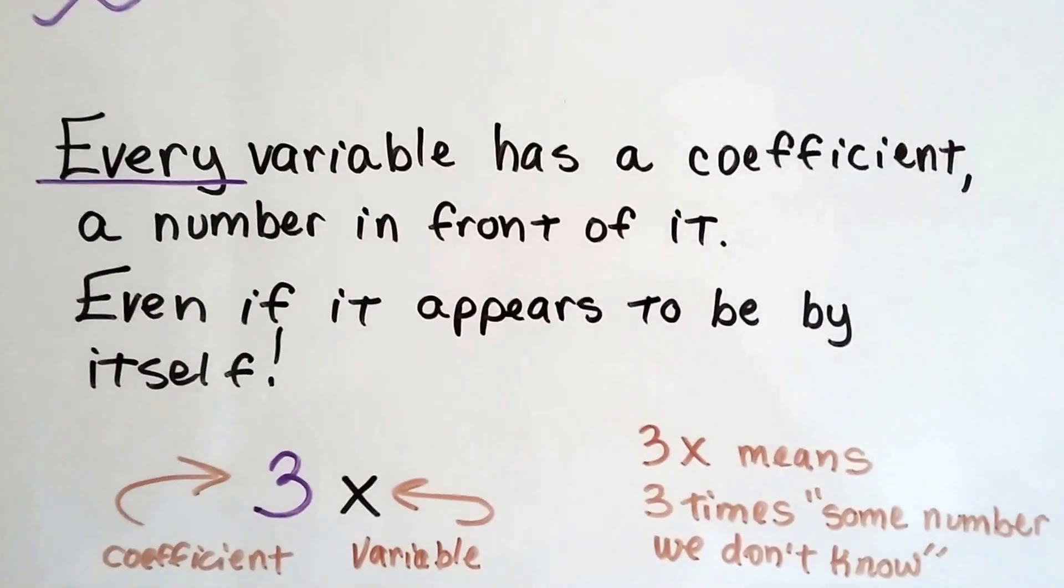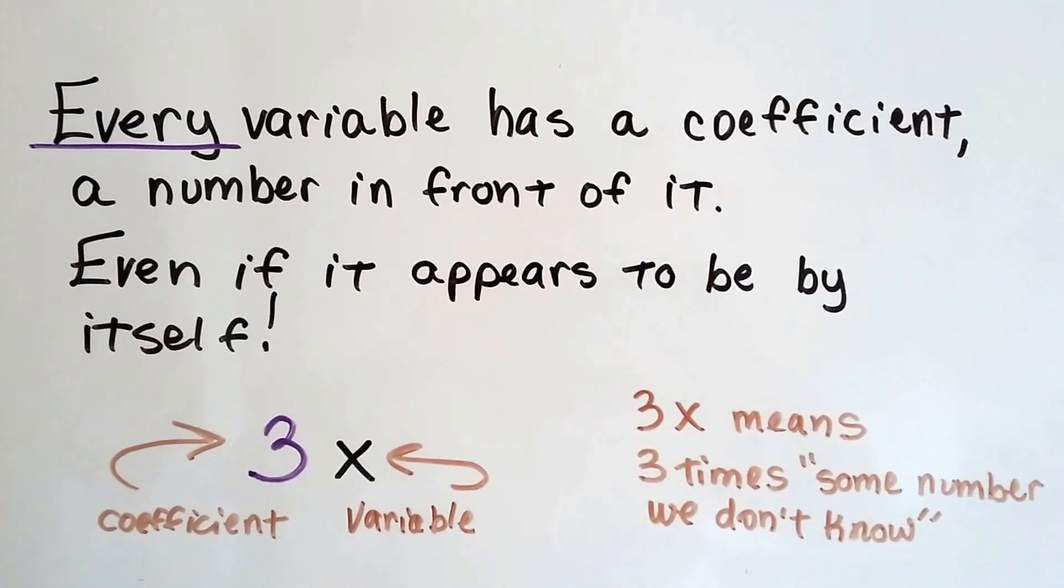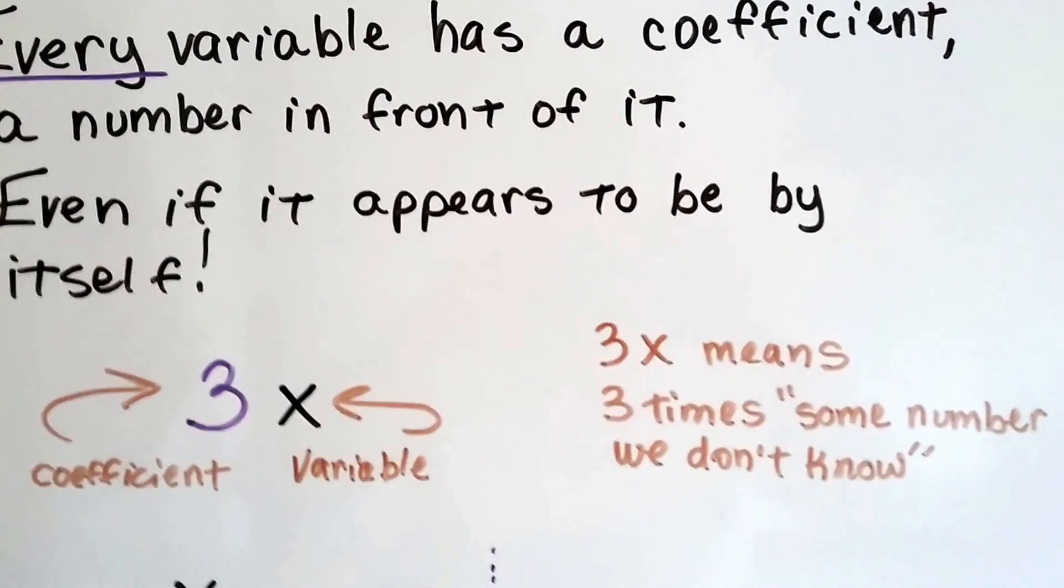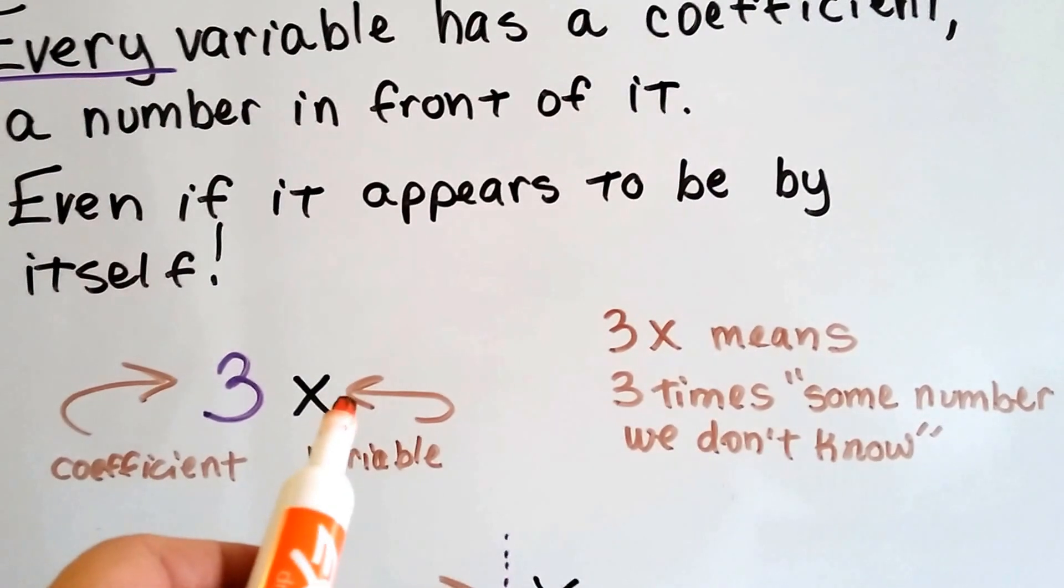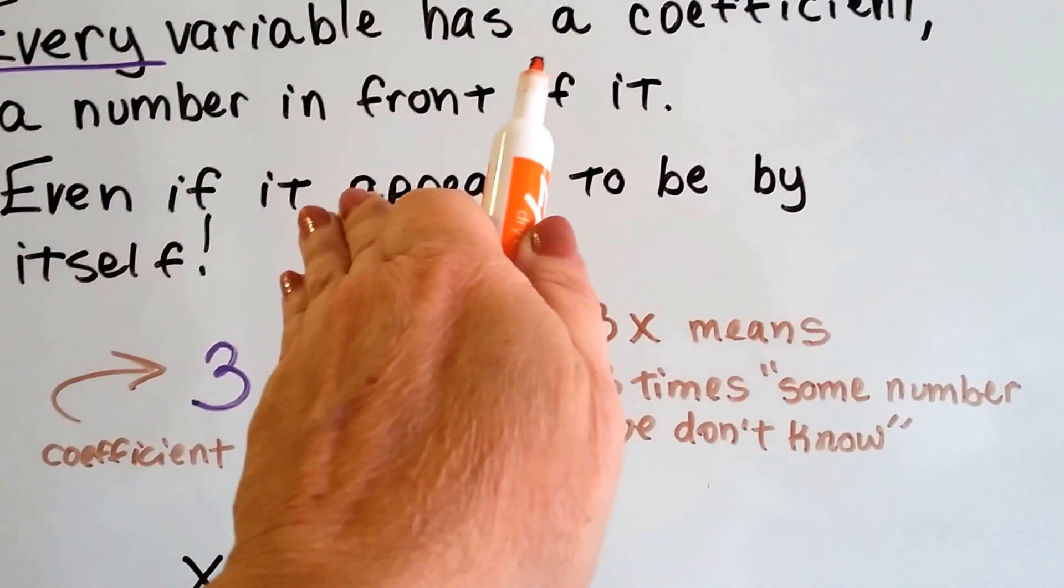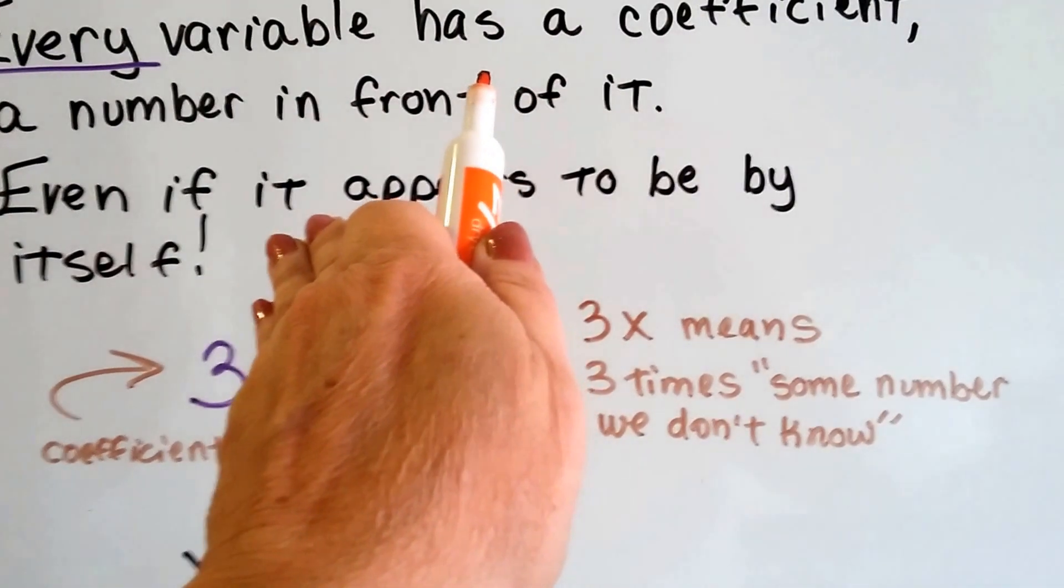Every variable has a coefficient, a number in front of it, even if it appears to be by itself. In 3x, the 3 is the coefficient and the x is the variable. If this variable were to leave, that 3 would be a standalone number and wouldn't be a coefficient anymore.